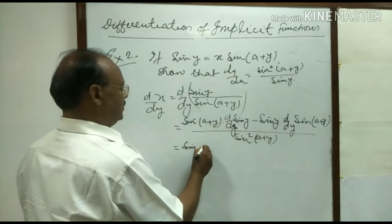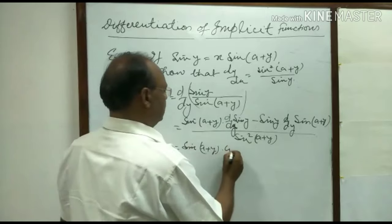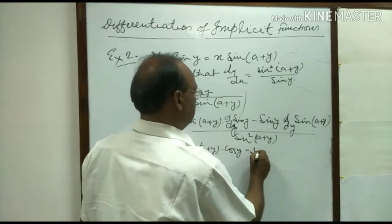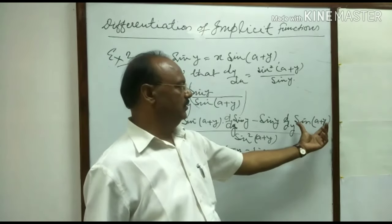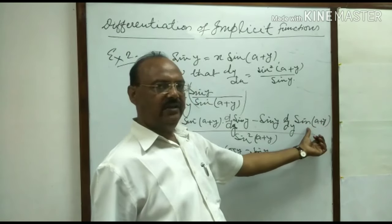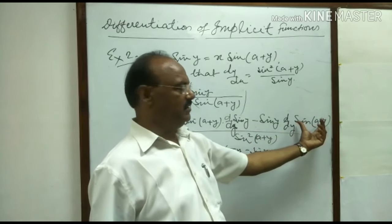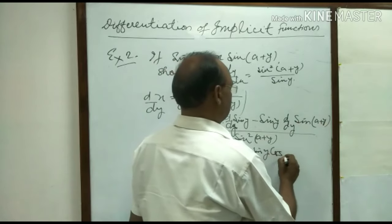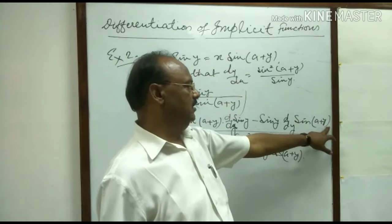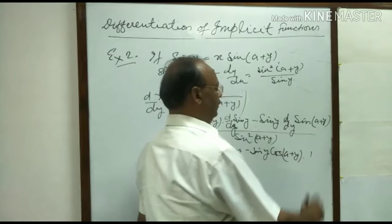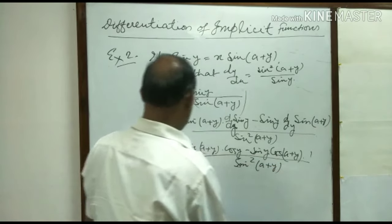This is sin(a plus y) times derivative of sin y with respect to y which is cos y, minus sin y times the derivative of sin(a plus y) with respect to y. Applying chain rule, derivative of sin(a plus y) with respect to a plus y is cos(a plus y), and derivative of a plus y with respect to y is 1. All upon sin squared(a plus y).